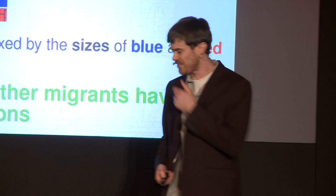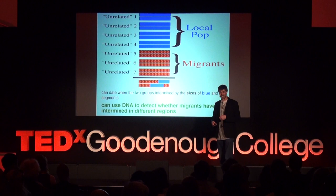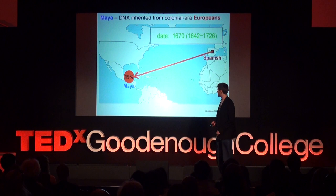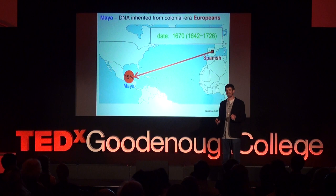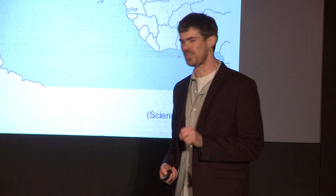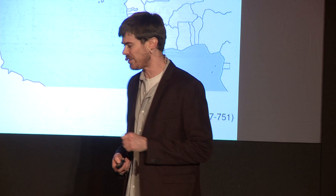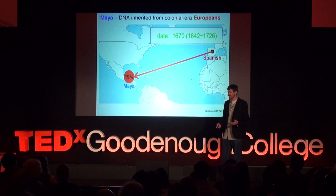DNA keeps a record of these events. You can use DNA to detect whether migrants have intermixed in any particular region, even if people in that region believe they've been genetically homogenous for a long time. Here's a real example: the Maya, a Native American group. We compared their DNA to 90 worldwide groups and found that 19% matched a source looking most genetically like modern-day Spanish. Looking at segment sizes, we dated this contribution to 1670 — or 1642 to 1726 with uncertainty — which fits nicely with the arrival of conquistadors from precisely that part of Europe.